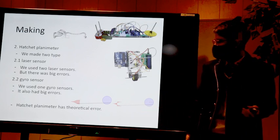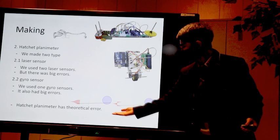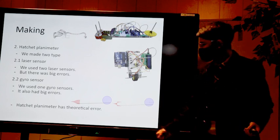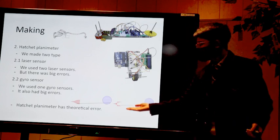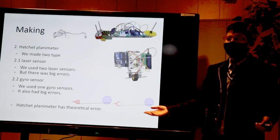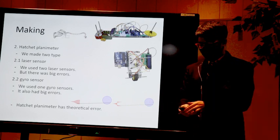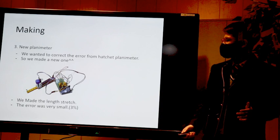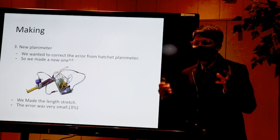The error is because of this red area. As you can see in this picture, red area always changes. It makes theoretical error. So we finally decided to make our own new planimeter.